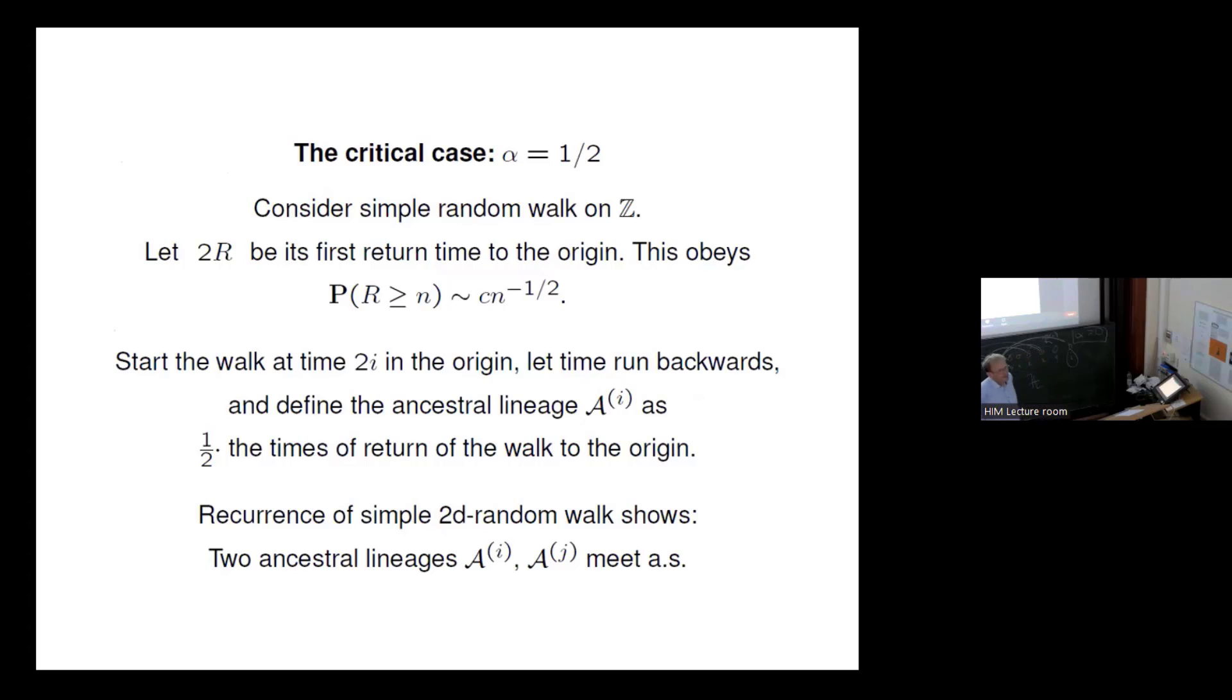And this is no coincidence that above one half and below one half, we have a different picture, because at alpha equals one half, we have a critical situation, right? Now, alpha equals one half, will they meet, or won't they meet? And the solution is on that slide.